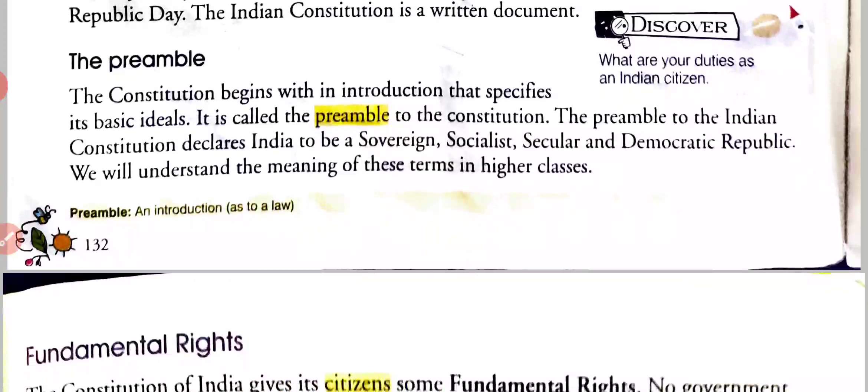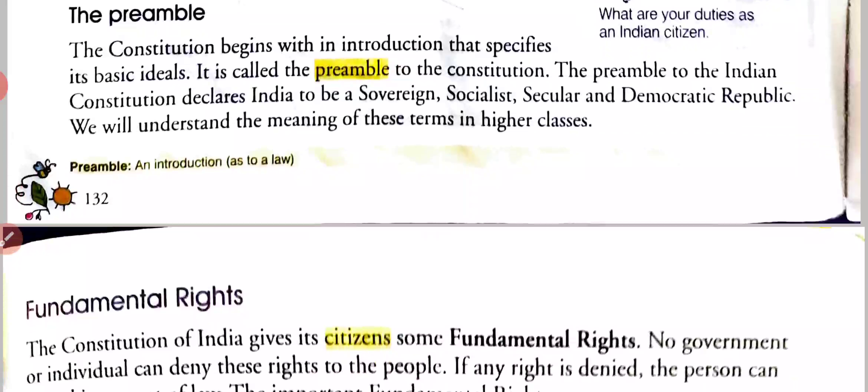The preamble is the constitution's introduction that specifies its basic ideals. It is called the preamble to the constitution. Preamble ka matlab hai prastavna — bhumika ya shuru karna. Sanvidhan ki shuruat us aradar se hoti hai jo iske mul araadarshon ko nirdishit karta hai. Isse sanvidhan ki prastavna kaha jata hai.